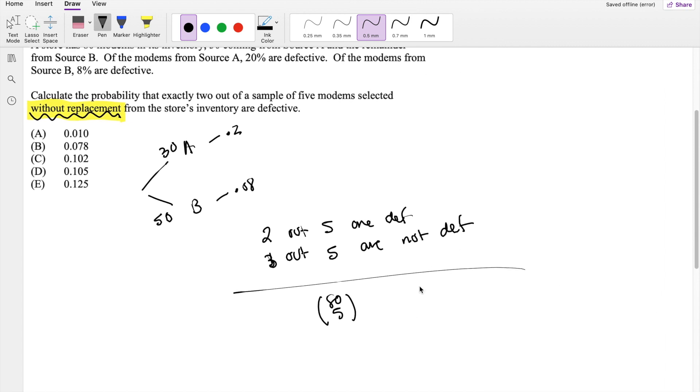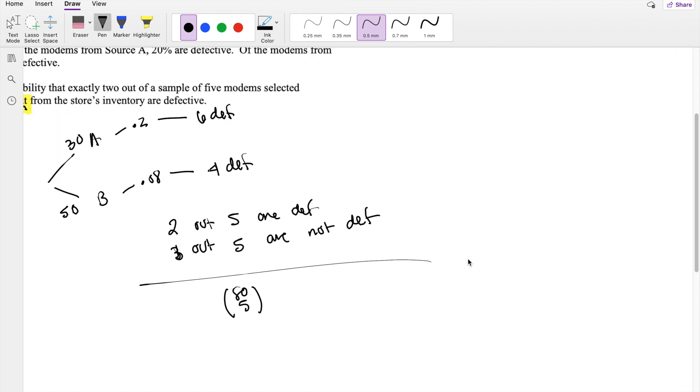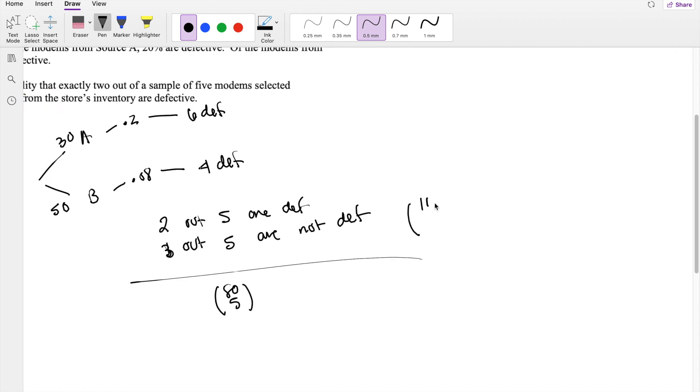And then what is the probability that 2 are defective? Well, from A, if there are 30 of them and 20% are defective, then we know that there are 6 defective ones. From B, if there are 50 and 8% is defective, then we know 4 are defective. So, in total, the amount of defective that we have is 10.